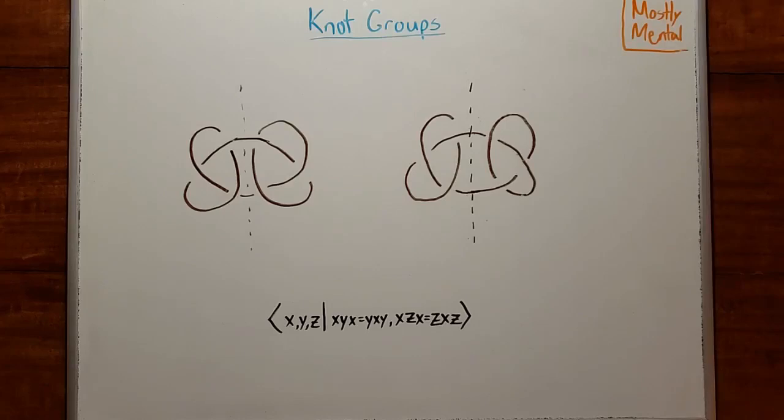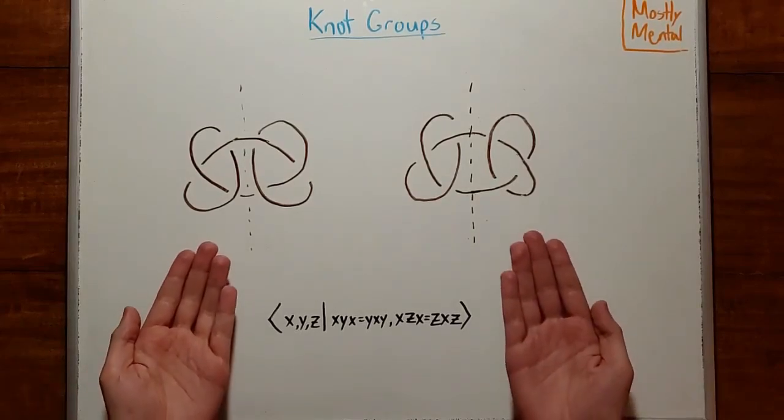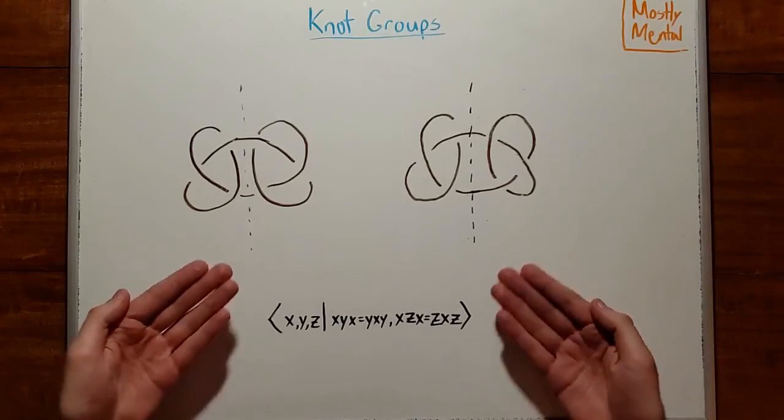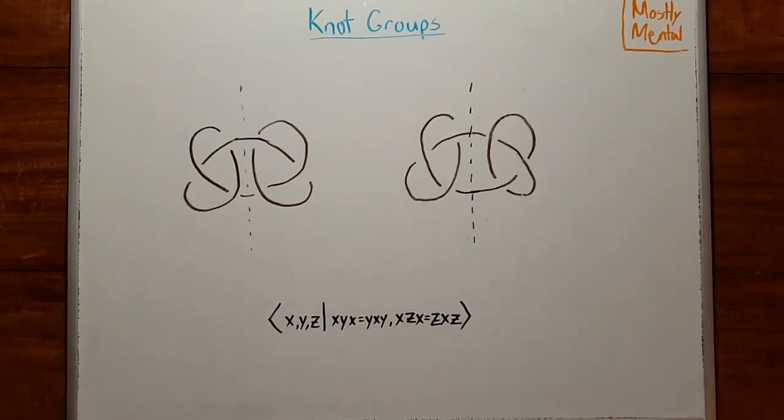A knot uniquely determines its knot group, and a natural question we might ask is whether the converse is true, and the knot group uniquely determines a knot. In other words, does every knot have a different knot group? It turns out the answer is no. Here we have two different knots, which, as an exercise, you can prove both have this same knot group. So the knot group isn't powerful enough to distinguish between every pair of knots.